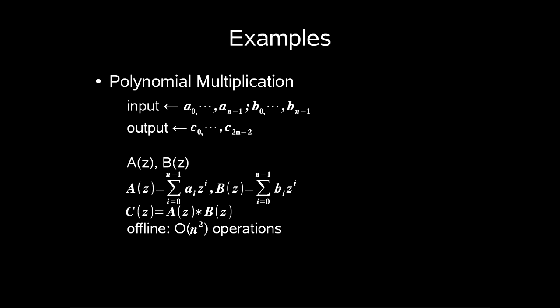The next example is concerning polynomial multiplication. We have two inputs, a from 0 to n minus 1 and b from 0 to n minus 1. Our output is the c from 0 to 2n minus 2. Our defined functions a of z and b of z, where a is calculated as the sum from 0 to n minus 1, ai times z to the power of i, and the same goes for b. This offline algorithm will take order n squared operations.